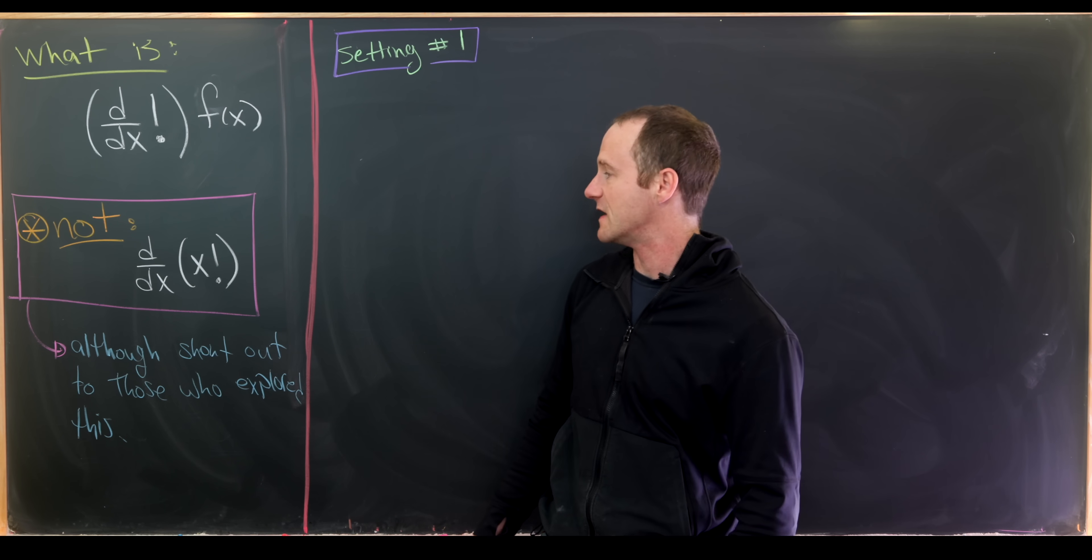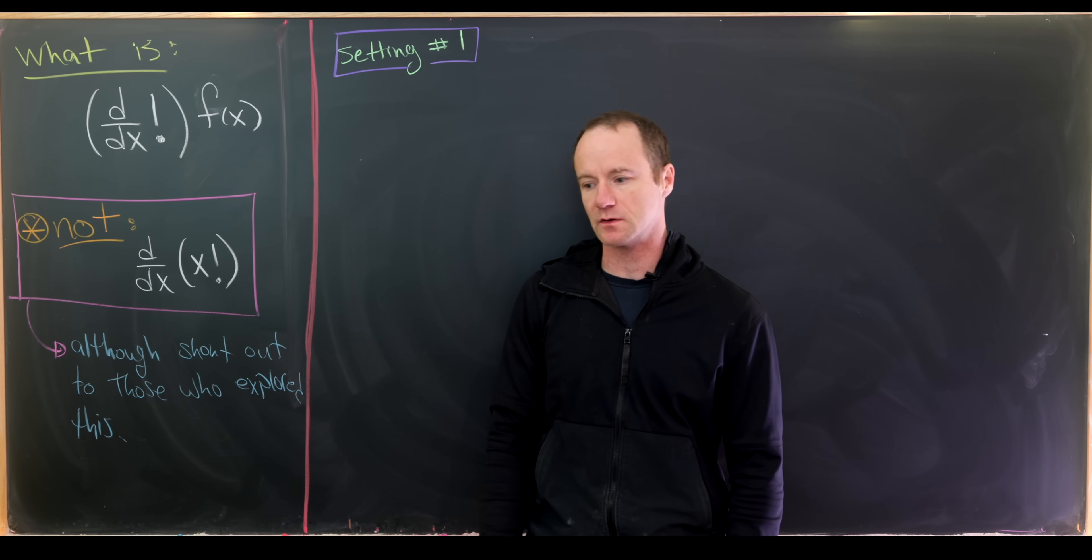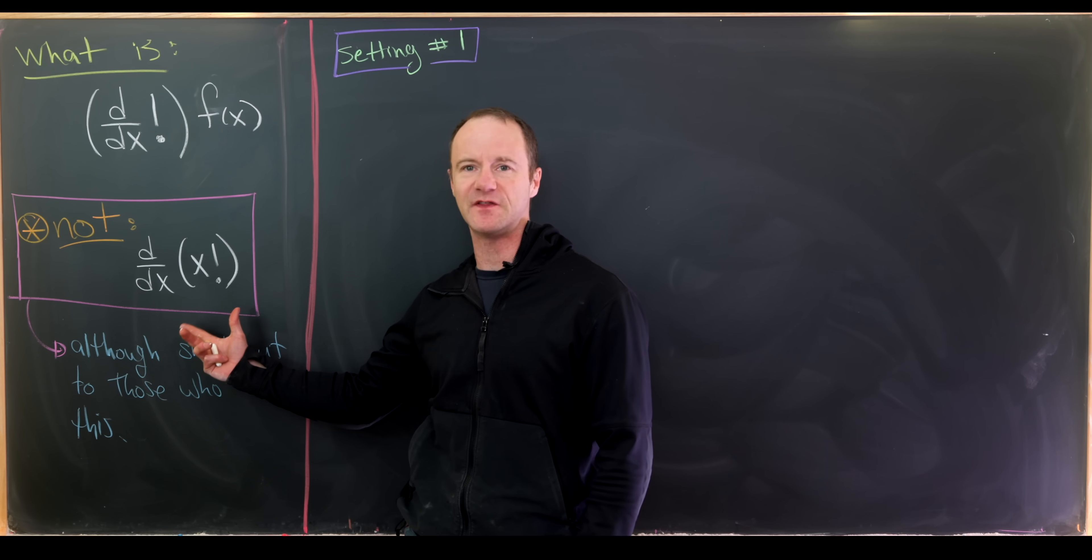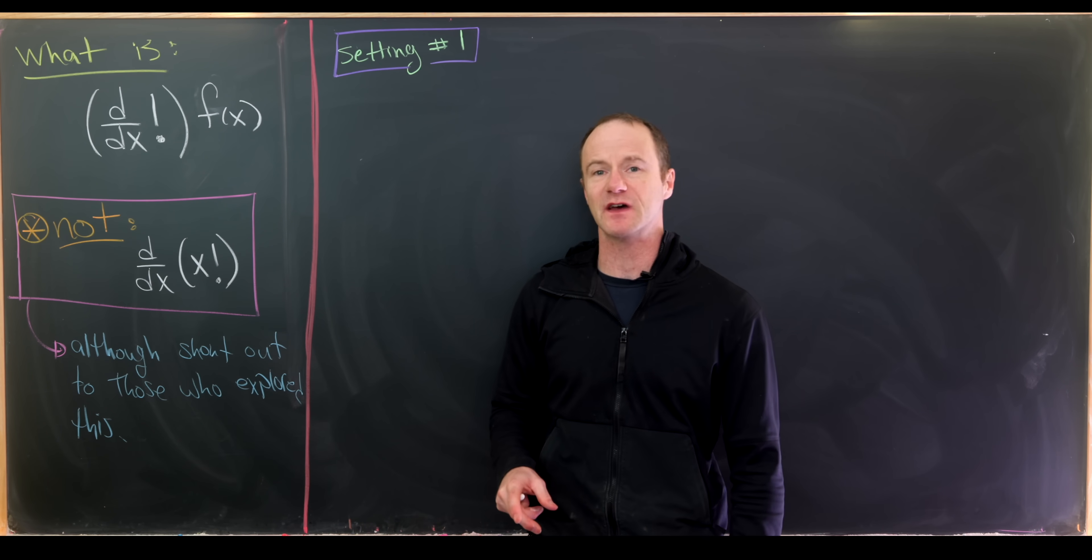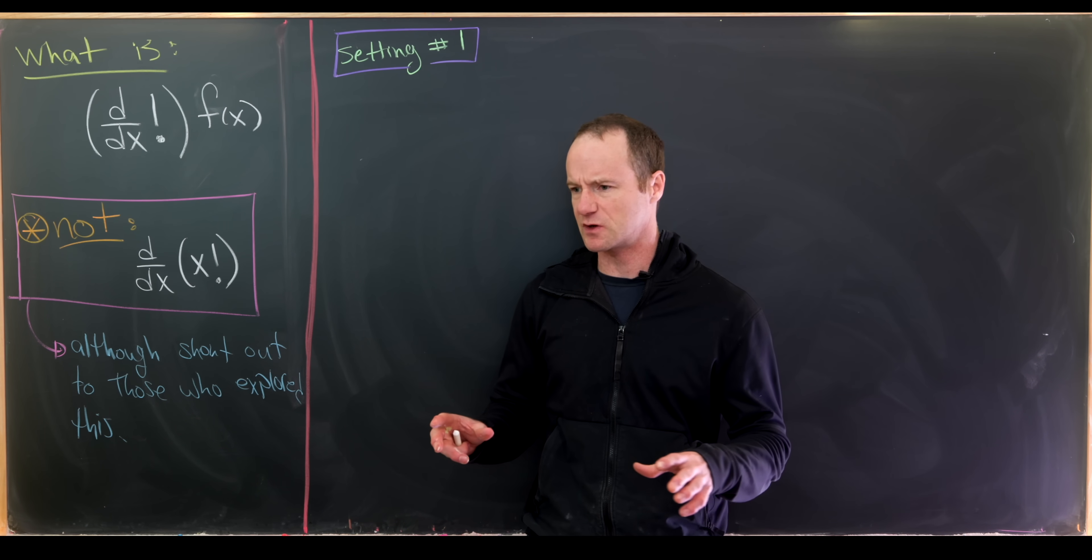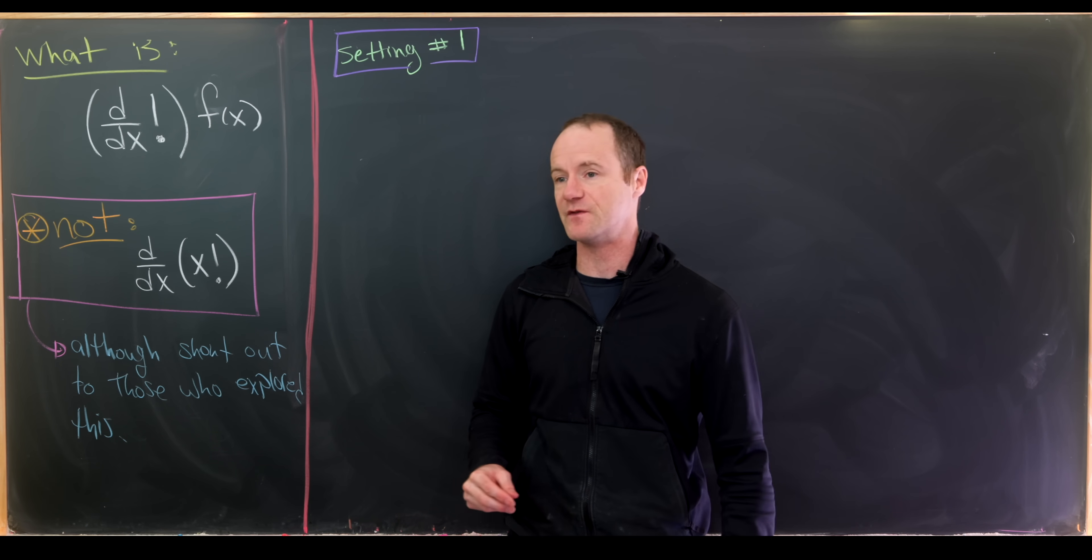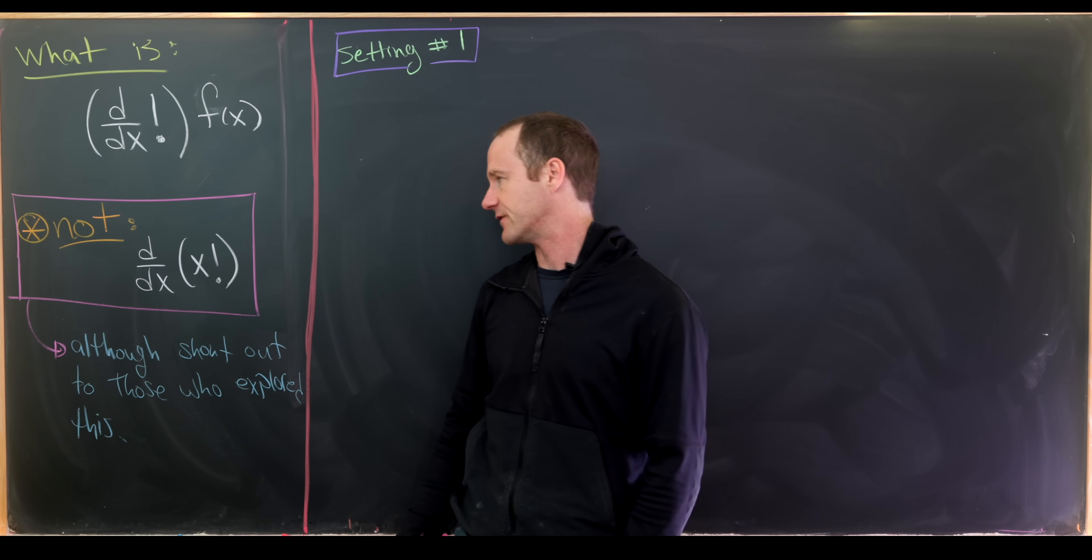I saw that a couple people had made videos about the derivative of x factorial. There's a fairly simple way to think about this. Instead of writing x factorial, you think about the gamma function evaluated at x, which is some sort of continuation of the factorial function as defined on non-negative integers.